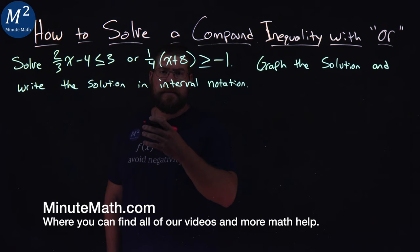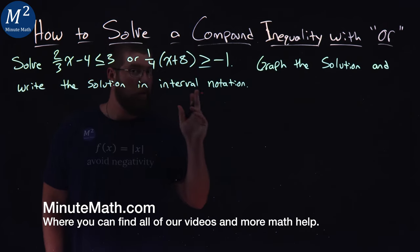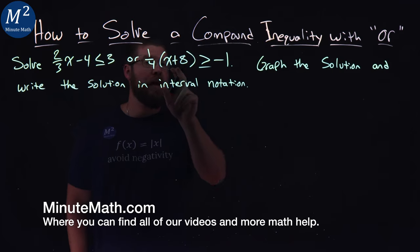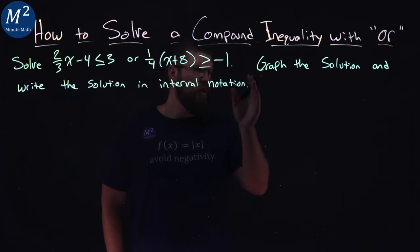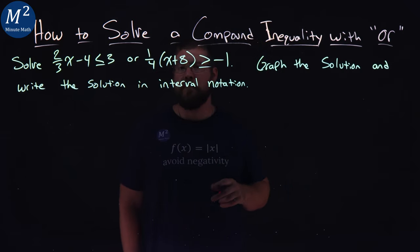We're given this problem here, solve 2 thirds x minus 4 is less than or equal to 3, or 1 quarter times x plus 8 is greater than or equal to negative 1. We want to graph the solution and write the solution in interval notation.